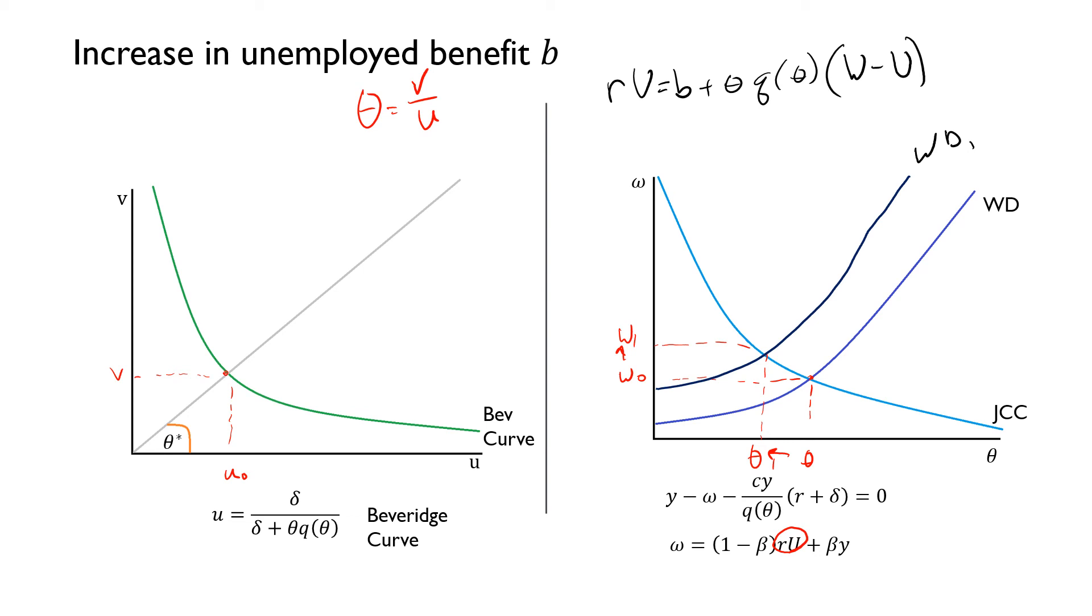When this falls, that can only happen when we have more unemployed compared to vacancies. That's simply because it's much more worthwhile to sit around unemployed. So we're going to see this inward shift and end up at this new equilibrium here.